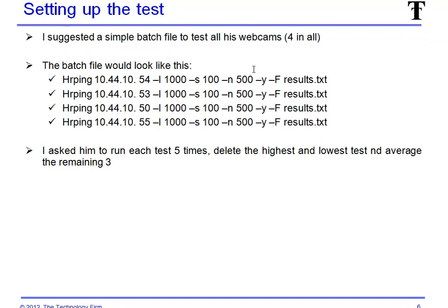So we set up our test, and you know me and my batch files — I said, let's write a little batch file. All the batch file had was the ping commands, that's it. By doing this, he just runs the batch file and everything gets written to the output file. With HR ping, it appends to the file — it doesn't overwrite it. So at the end, we'll just have all the statistics in a text file, which is pretty cool. I said, run this five times, and then I asked him to delete or ignore the highest value and the lowest value, and then average the remaining three.